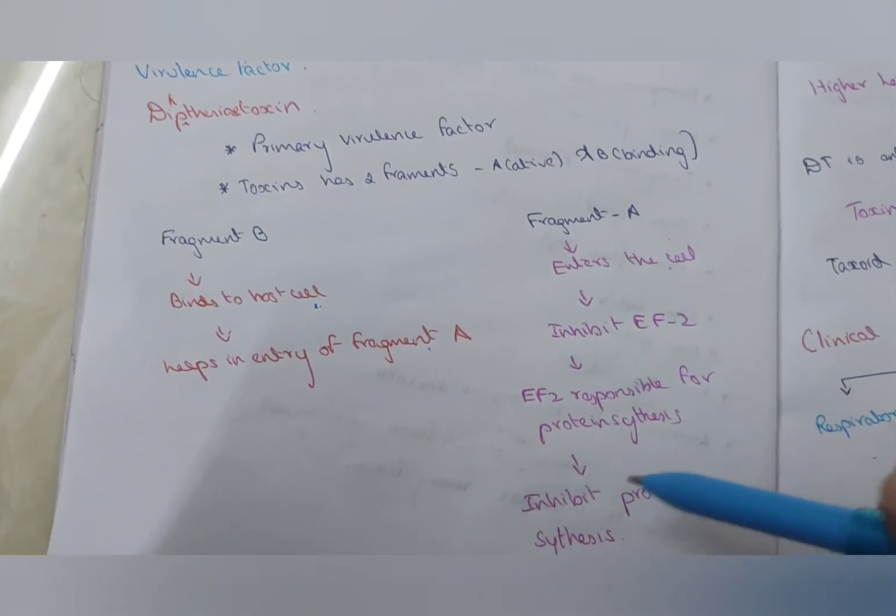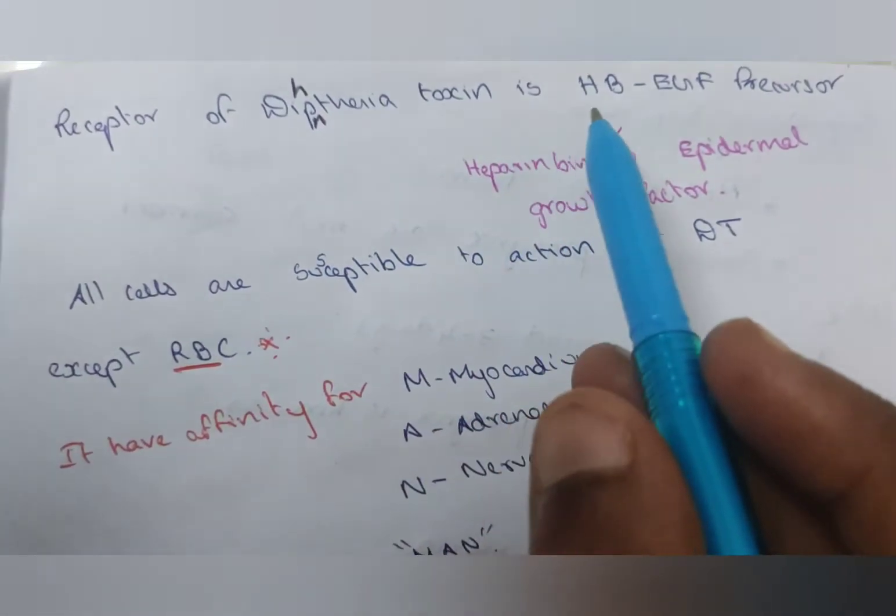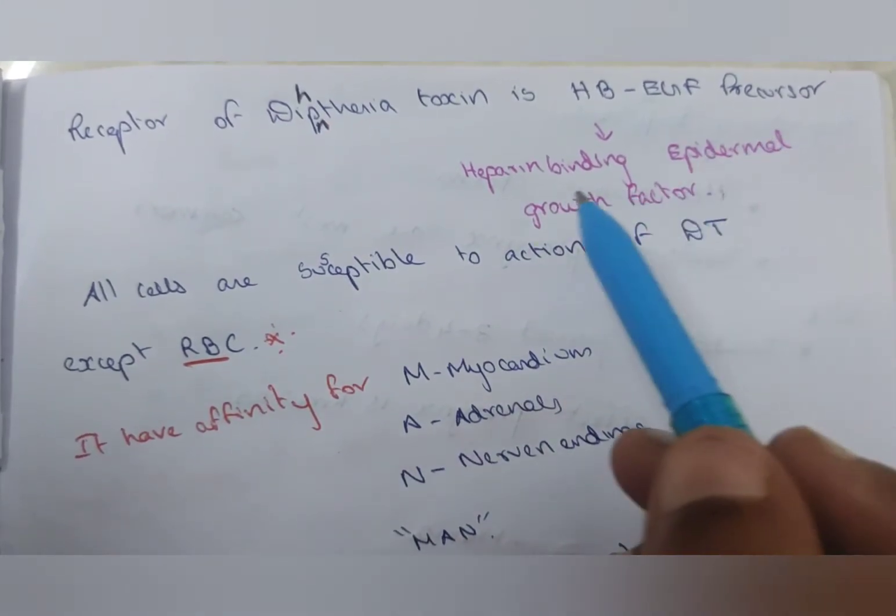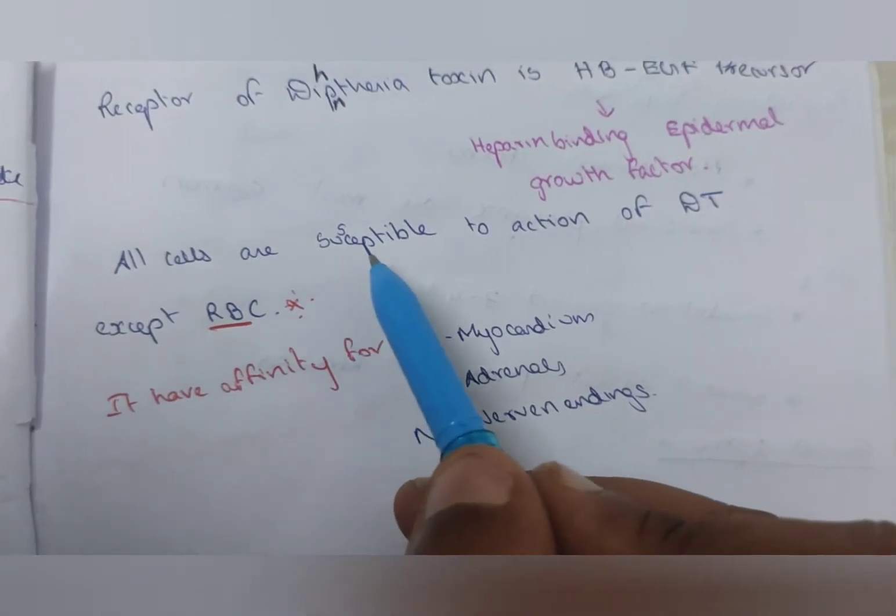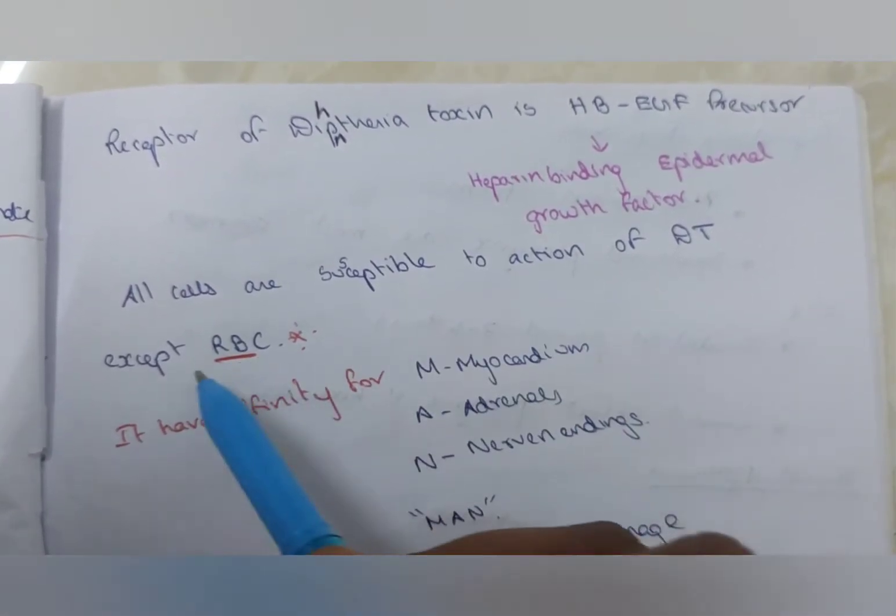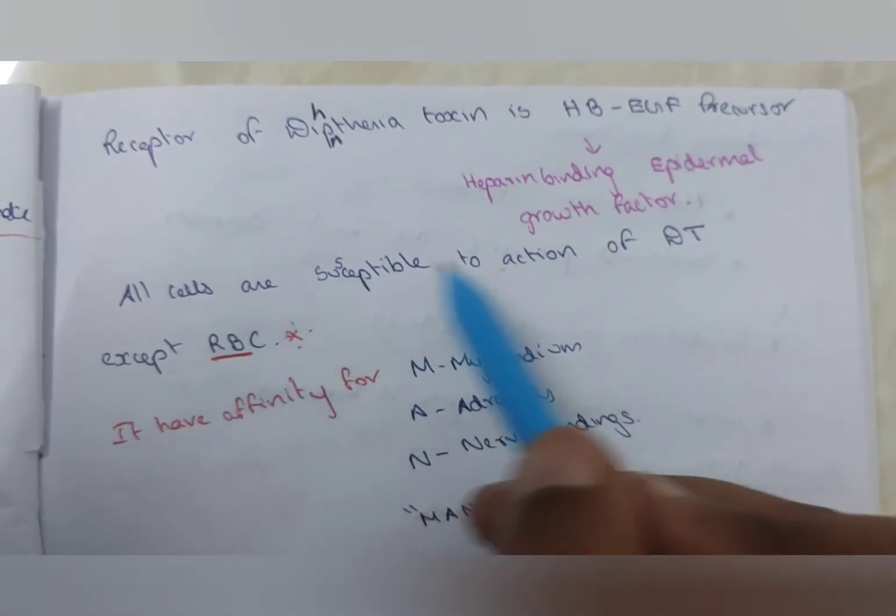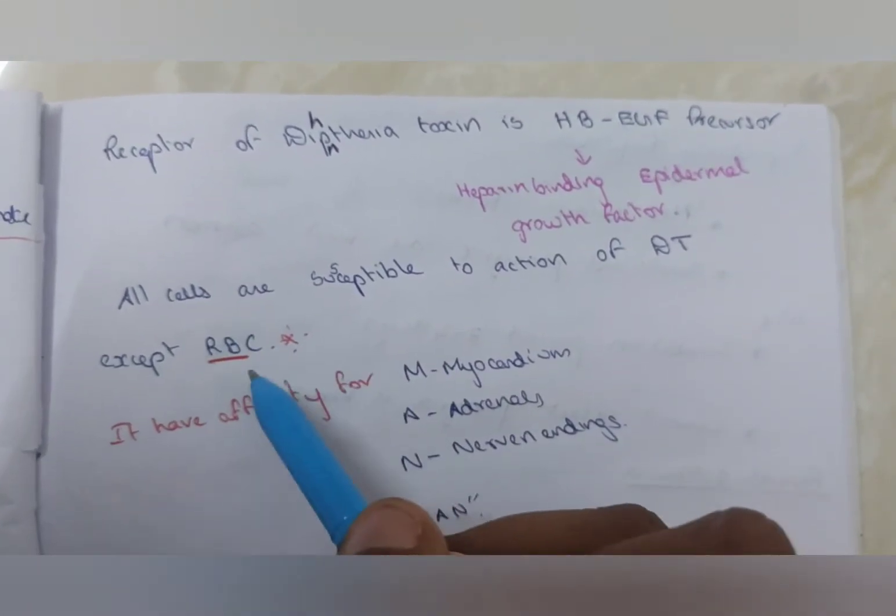EF2 is responsible for protein synthesis, so the protein synthesis is inhibited. The receptor of diphtheria toxin is HB-EGF precursor, heparin-binding epidermal growth factor. All cells are susceptible to the action of diphtheria toxin except RBC. This is the most important point. All cells are susceptible to diphtheria toxin except RBC.